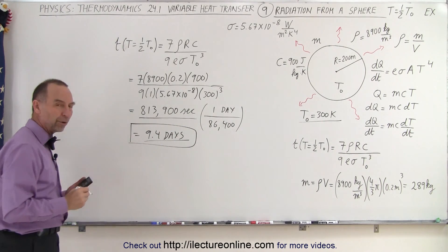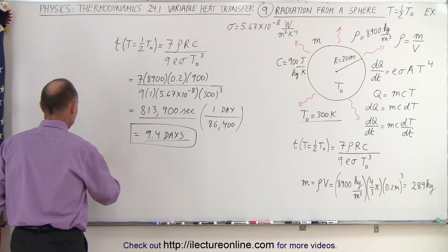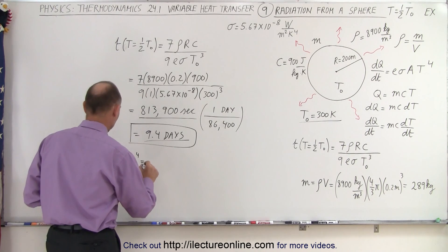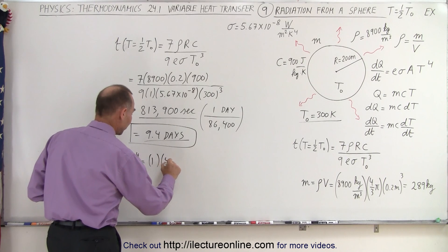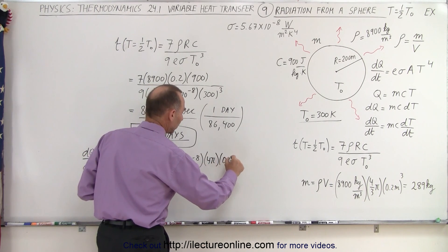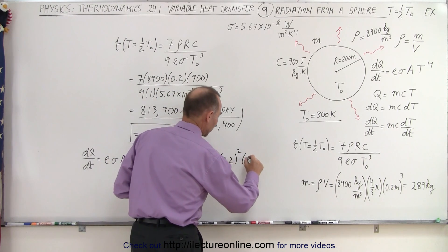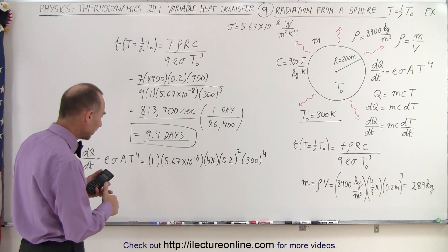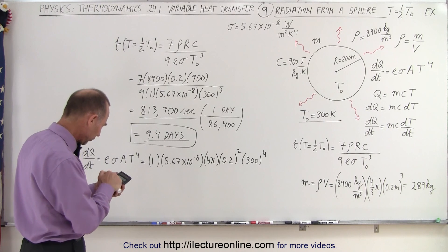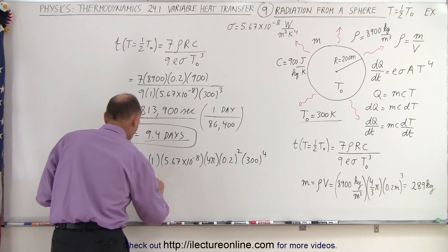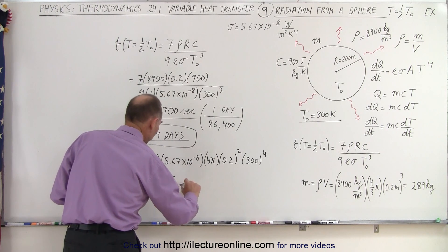So this was the answer we got — more than 9 days to reach half its original temperature. But using the equation dQ/dt = E·σ·A·T⁴, let's see how much that is. E is 1, sigma is 5.67×10⁻⁸, the surface area is 4π times the radius squared, and the temperature is 300 to the 4th power. Calculating: 5.67×10⁻⁸ times 4π times 0.2² times 300⁴ equals 231 joules per second, or 231 watts.